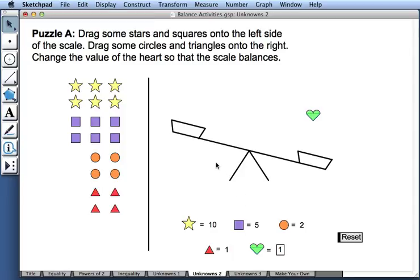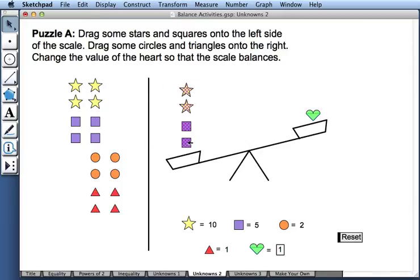In the next unknowns activity, we drag some stars and squares onto the left side of the scale. So let me drag some there now. And then we're going to drag some circles and triangles onto the other side.